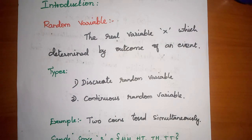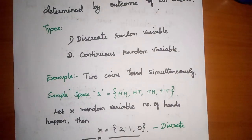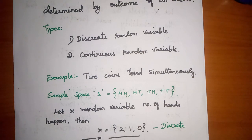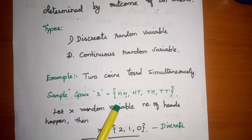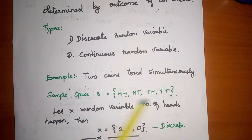Let's go to the example. In school days, we recall the same topic: discrete random variable and continuous random variable — what is the difference? We toss two coins simultaneously. The sample space can be: two heads, one head and one tail, or two tails. This is the event, and this is the probability.